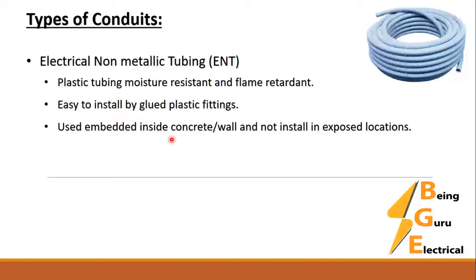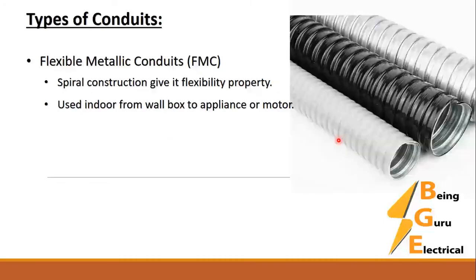Next we have Flexible Metallic Conduits, or FMC. As you can see in the picture, the spiral construction gives it flexibility. It is used indoors and is typically used for connecting a wall box to an appliance or motor.